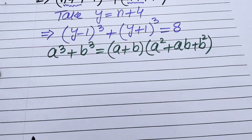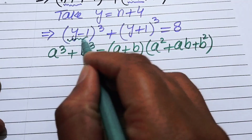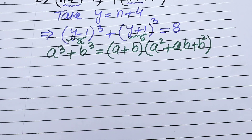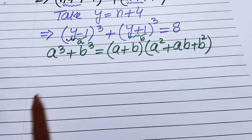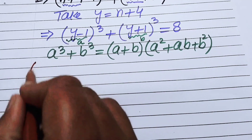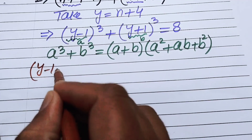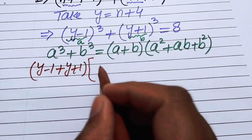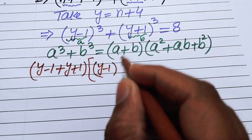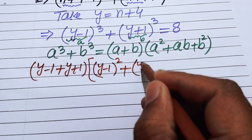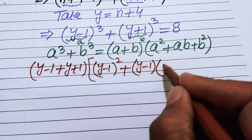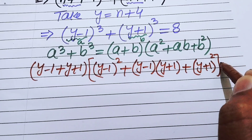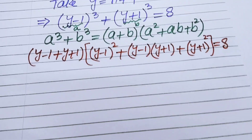Here we identify a = y−1 and b = y+1. Applying the cubic formula, we get (a+b) · (a² + ab + b²) = 8, which expands to (y−1+y+1) · ((y−1)² + (y−1)(y+1) + (y+1)²) = 8.